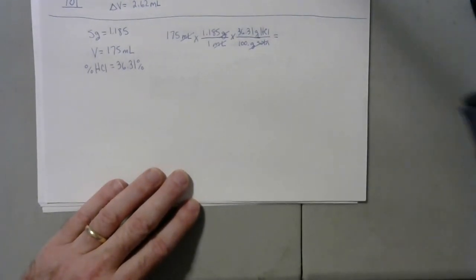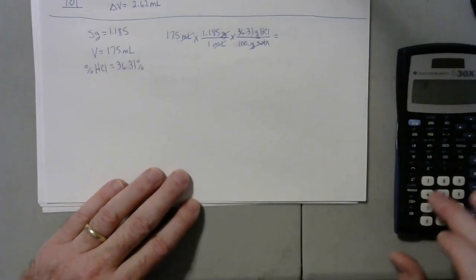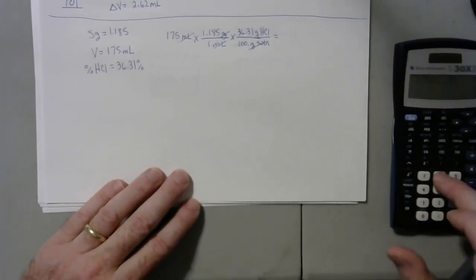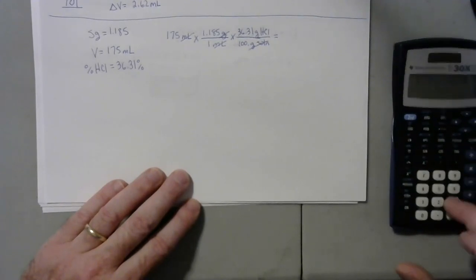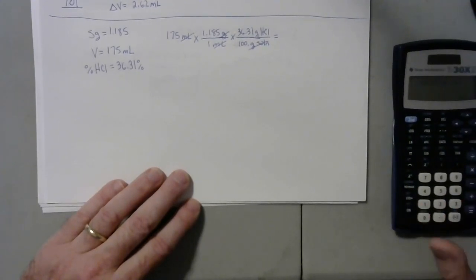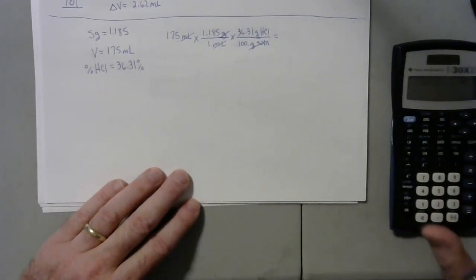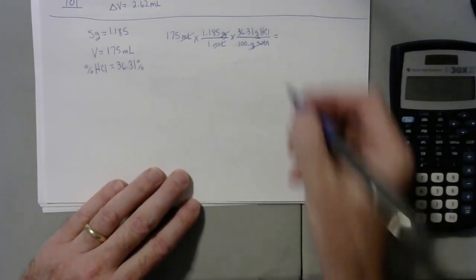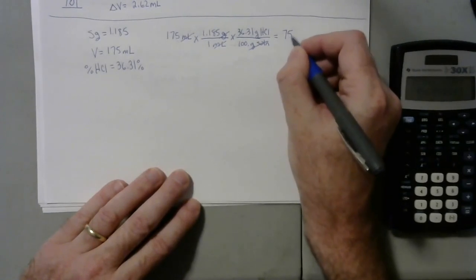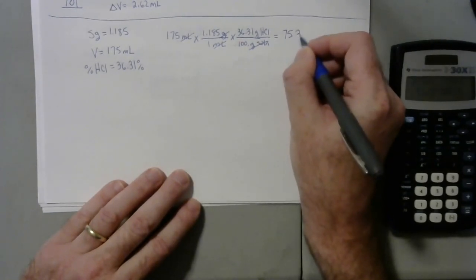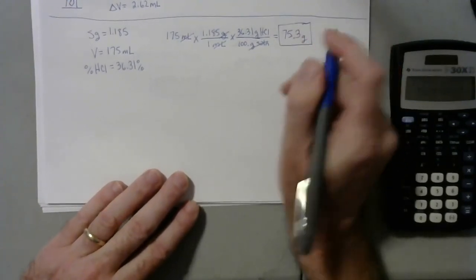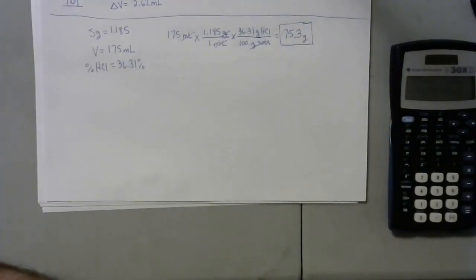So now all I've got to do is run that through my calculator. 175 times 1.185 times 36.31 divided by 100. We get 75.3 grams. And that would be your answer.